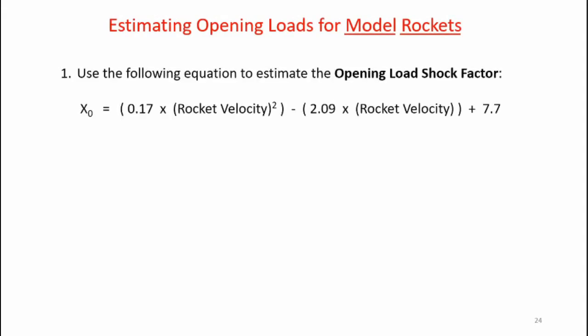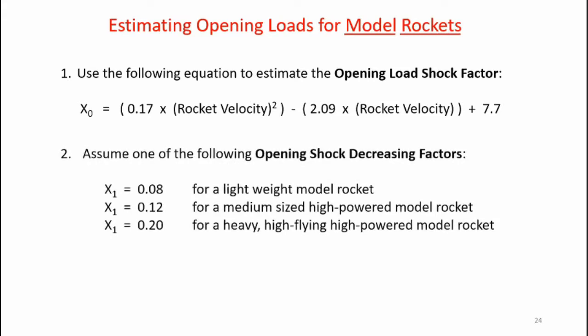Here's how we estimate the opening loads for a model rocket. First, we use the curve fit equation determined earlier to calculate x-sub-zero, the opening load shock factor. We then assume one of the following opening shock decrease factors, which are consistent with small model rockets. For a small, lightweight model rocket, x-sub-one should be 0.08. For a medium-sized high-powered rocket, we can assume x-sub-one is 0.12. And for a heavy, high-flying high-powered model rocket, we can use x-sub-one of 0.2.